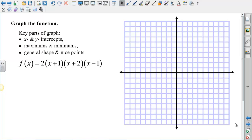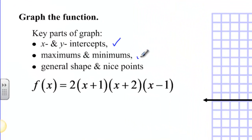So let's go ahead and try and graph a function, polynomial function, using what we know already. Now a couple of key points that we need to make sure are in each graph is the x and y intercepts, any minimum and maximum points, and also the general shape and other nice points that are on the graph.